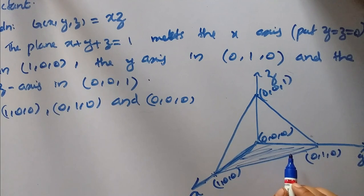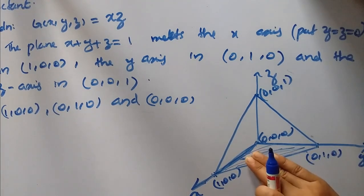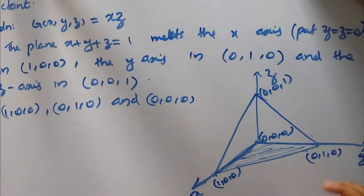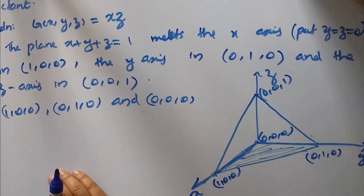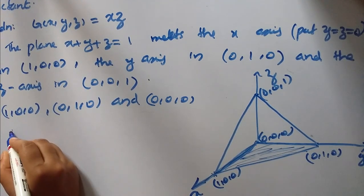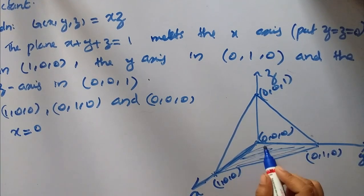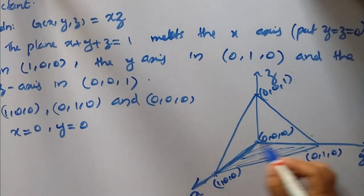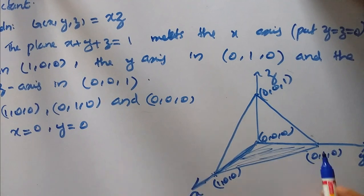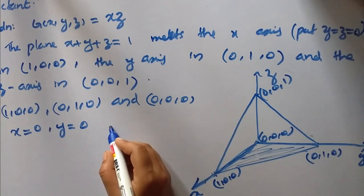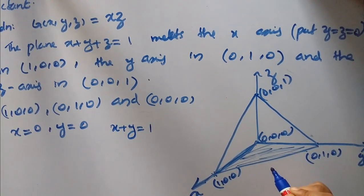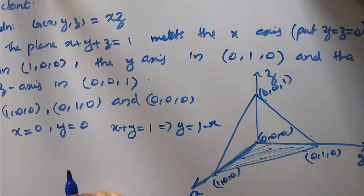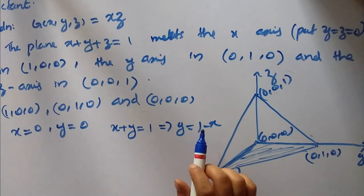This is our region R. The triangle is bounded by the lines x equal to 0, y equal to 0, and x plus y equal to 1, since setting z equal to 0 in x plus y plus z equal to 1 gives x plus y equal to 1.